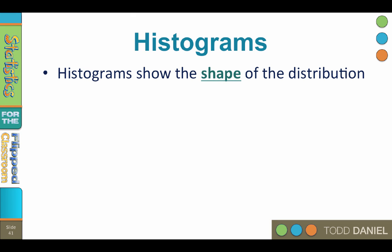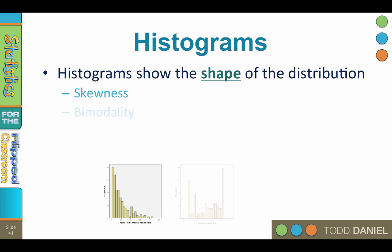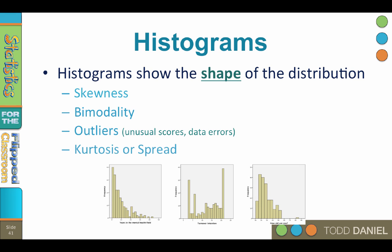Histograms show us the shape of the distribution. When all of the scores are stacked on one end of the distribution, it is said to be skewed, and the histogram shows us the skewness. When the scores have two major peaks, they are bimodal, and the histogram shows us the bimodality. If we have outliers in the data, these will show up on the histogram, as will the shape of the kurtosis or the spread of the data.